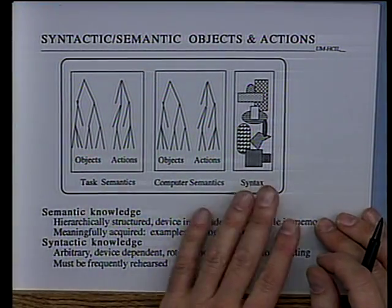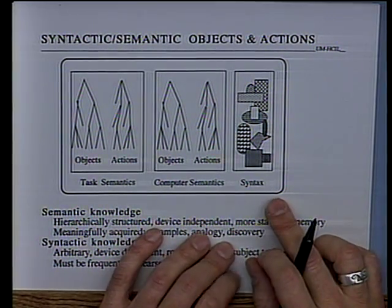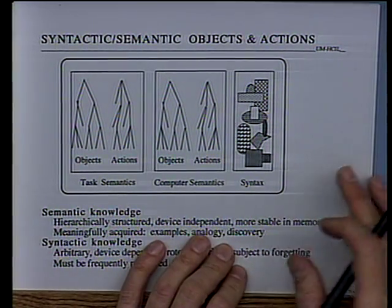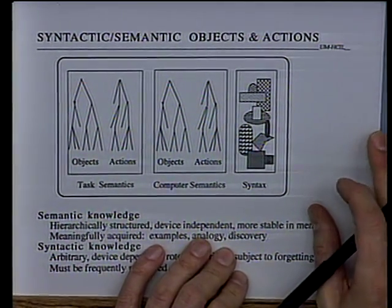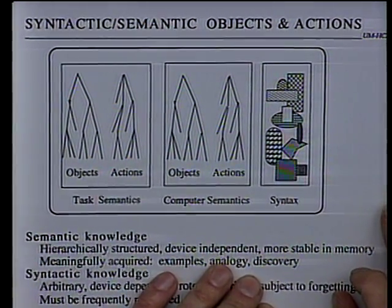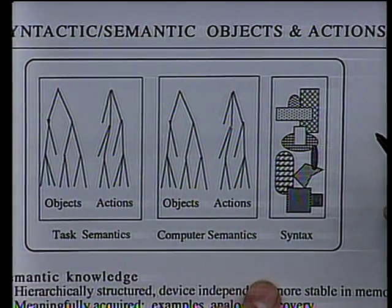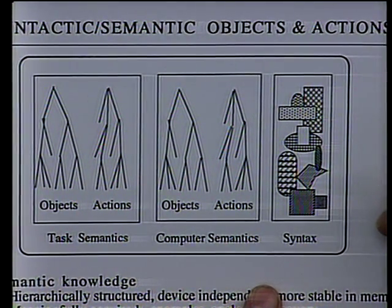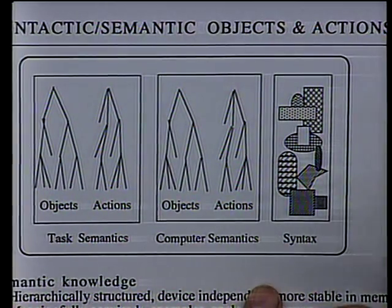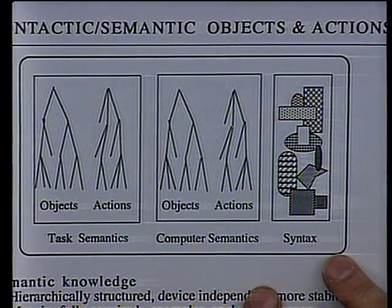The fundamental principle is that there are three categories of knowledge. The detailed syntactic knowledge — do I click or double click, how do I type a command, where do I type — are the details. The presentation of it, whether the thing uses a large font or a small font, color or not, all those visual presentation details I would load into the syntactic issues.